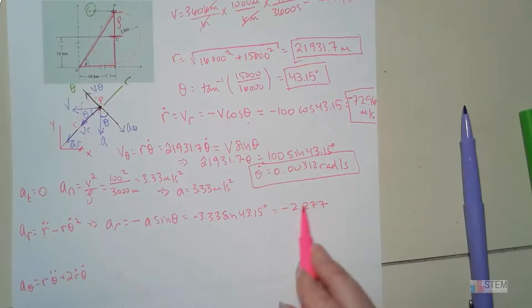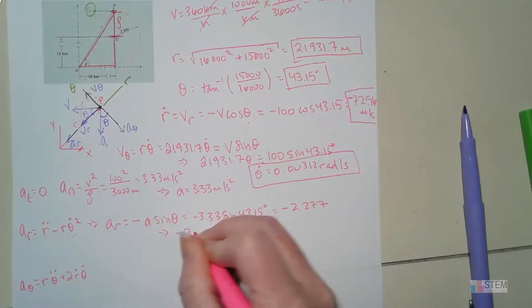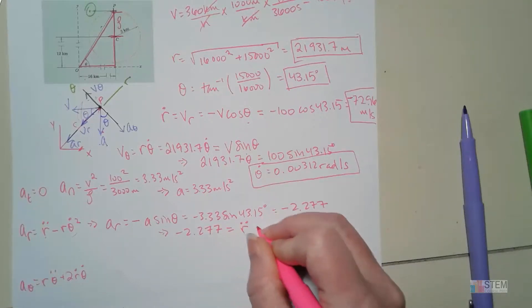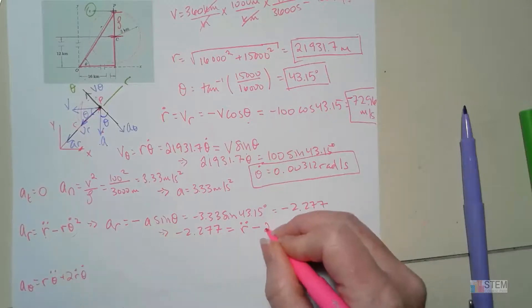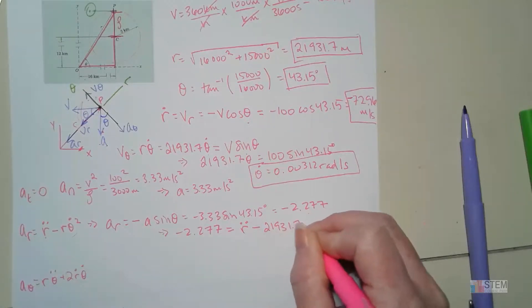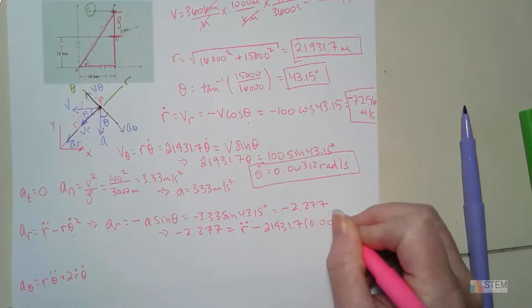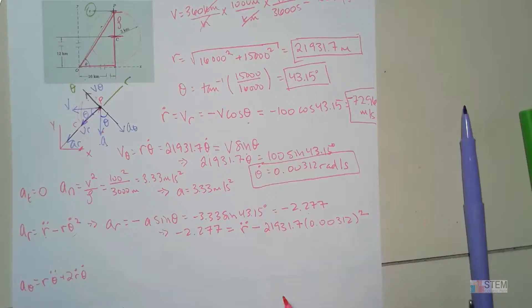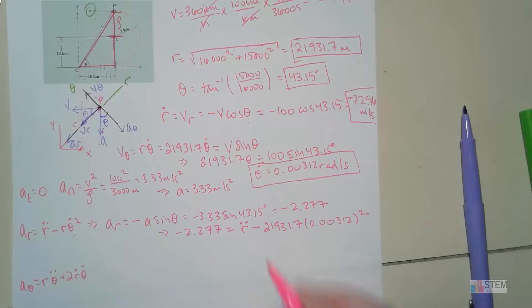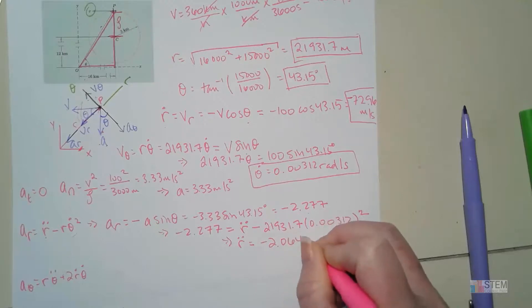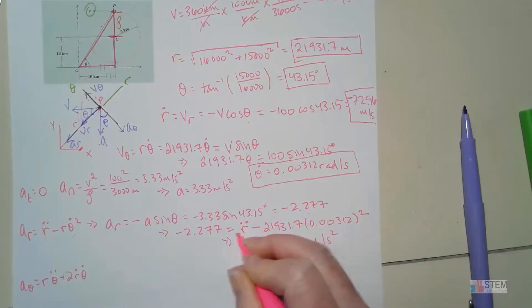This value must equal r̈ − rθ̇², so: −2.277 = r̈ − 21,931.7 × (0.00312)². The only unknown is r̈, which gives r̈ = −2.064 m/s².